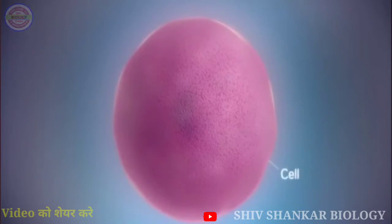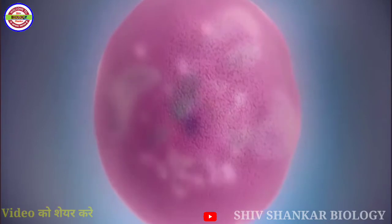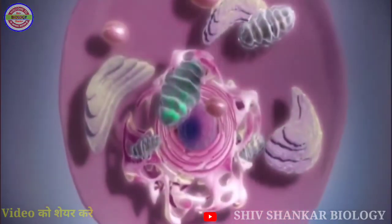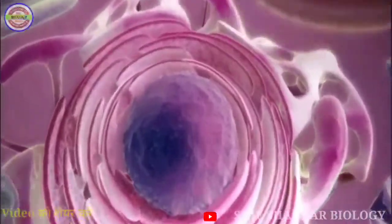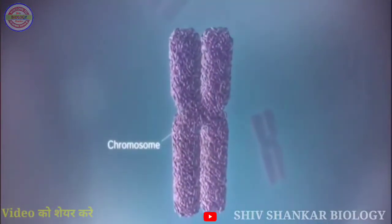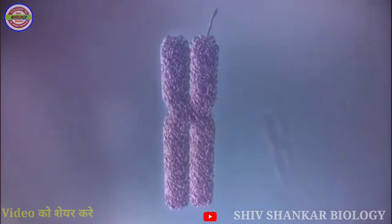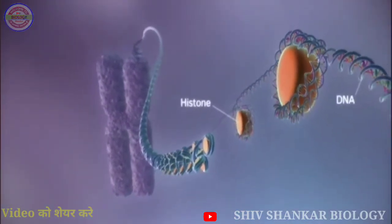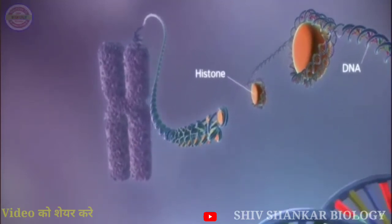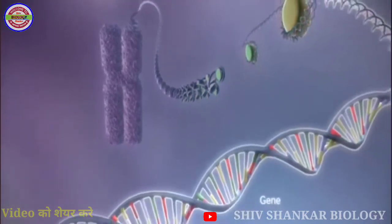Here is a cell, the basic unit of all living tissue. In most human cells there is a structure called the nucleus. The nucleus contains the genome. In humans, the genome is split between 23 pairs of chromosomes. Each chromosome contains a long strand of DNA, tightly packaged around proteins called histones.